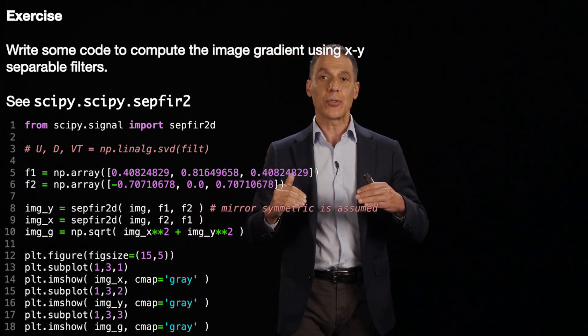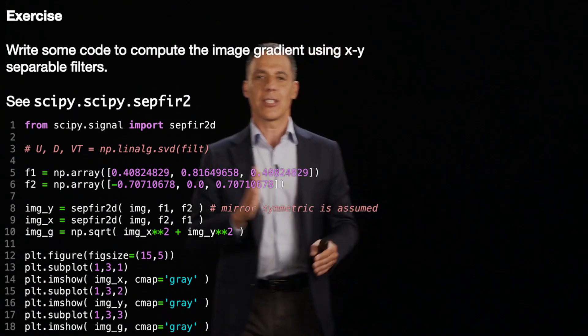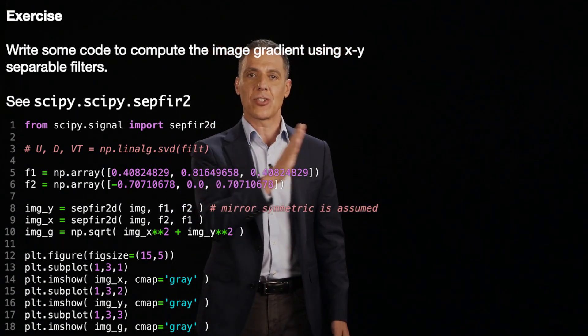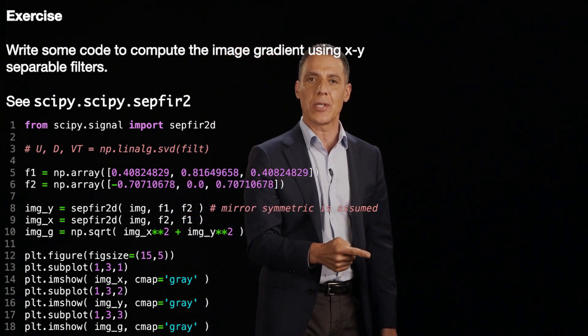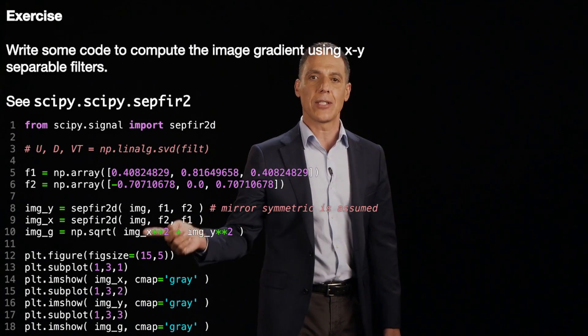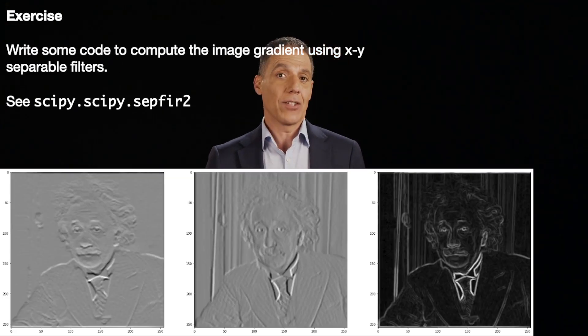That's going to give me my vertical derivative. How much are things changing top to bottom? And it gives you my horizontal derivative. How much are things changing left to right? I've got two derivatives in Y and X. I'm going to square them. I'm going to sum them. I'm going to go ahead and compute the gradient. And then I'm going to display everything.